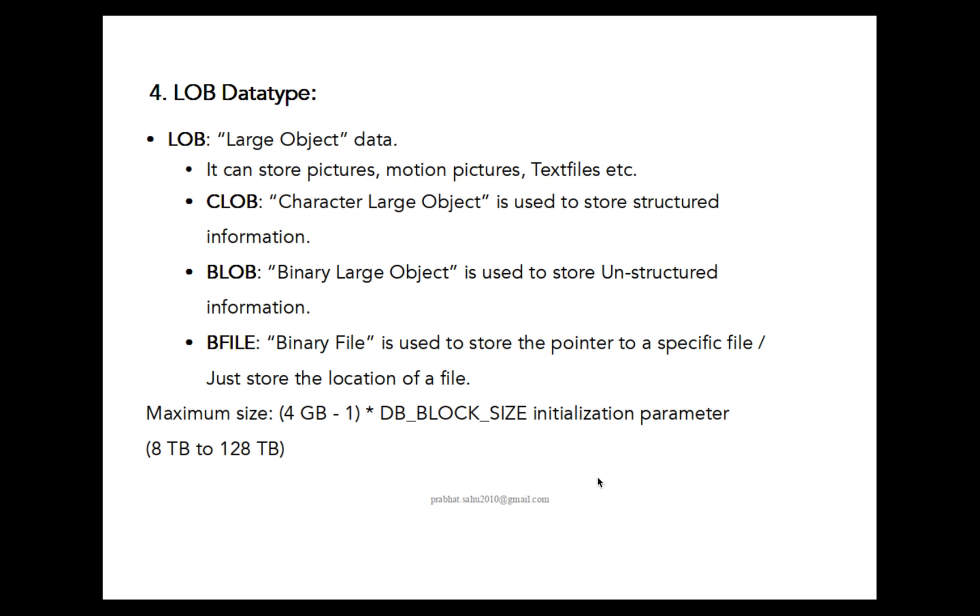Next, LOB data types means Large Object. It can have CLOB, BLOB, and BFILE types data. This LOB is used to store pictures, motion pictures, text files, any big size file you can store under LOB. Various types are CLOB, CLOB means Character Large Object, it is used to store structured information. Structured information means text file with a specific file format.